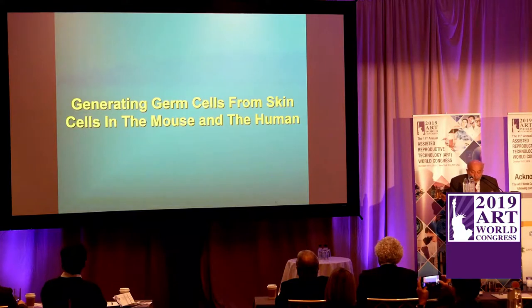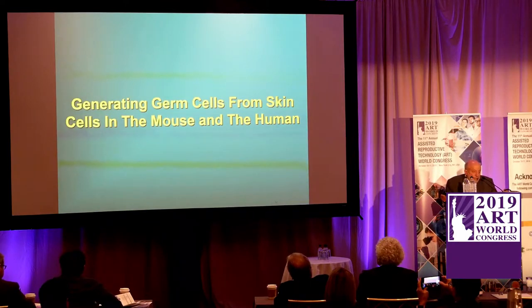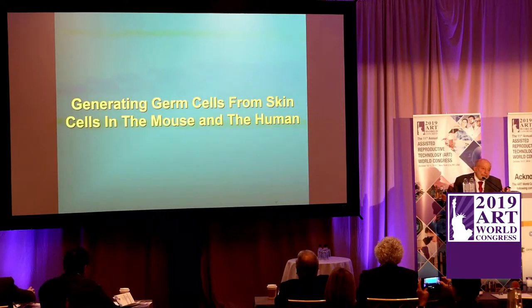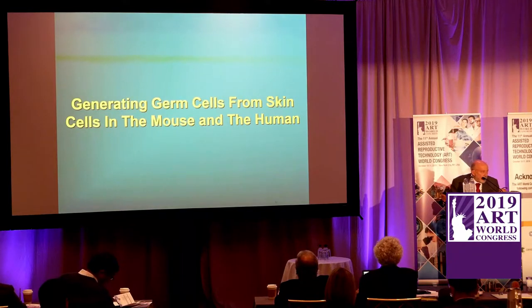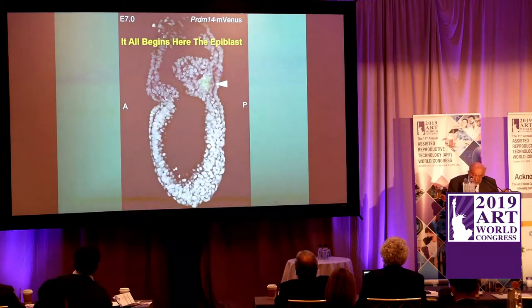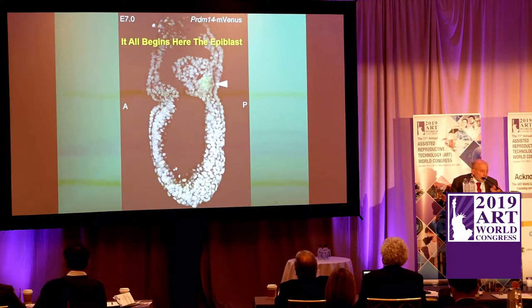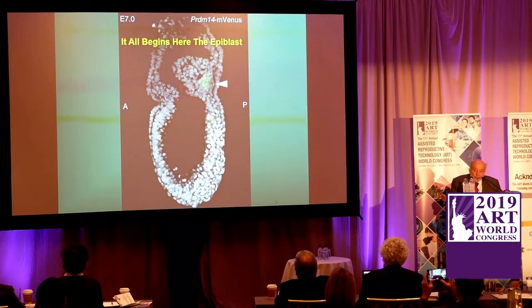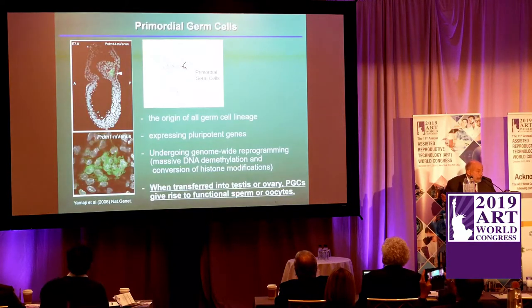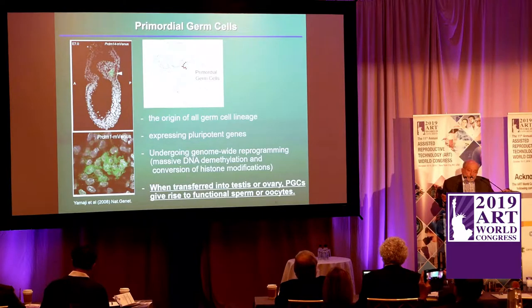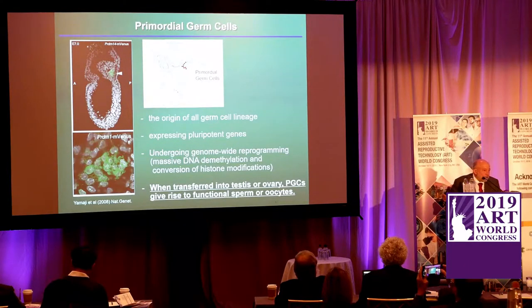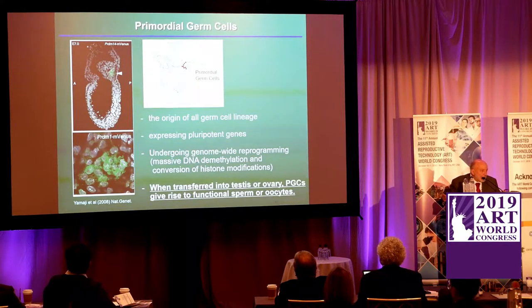Now, what about generating germ cells from skin cells in the mouse and in the human? We certainly understand how to do this in the mouse — low efficiency, but that can be increased. We have started a project in the human with the collaboration I mentioned. It all begins in the epiblast, where we have primordial germ cell specification in the very early embryo. I'll send you all these slides if you want — it's silver at infertile.com.